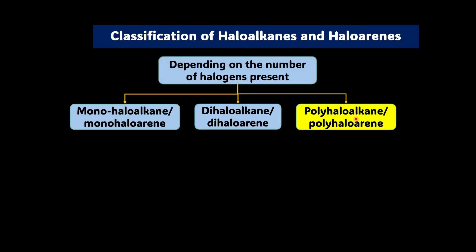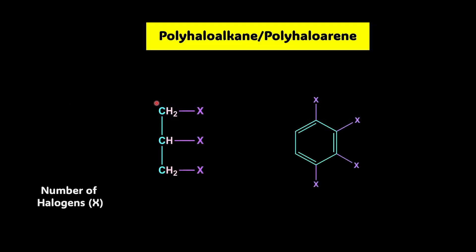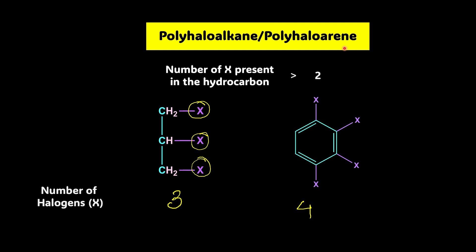Now let's talk about polyhaloalkanes or polyhaloarenes. Like the name suggests, there are going to be more than two halogens. For example, here we have an alkyl chain to which three halogens are attached — so it's a polyhaloalkane. In the second example, we have a benzene ring with four halogens — so it's a polyhaloarene. Polyhaloalkane and polyhaloarene is a generic term we can use whenever the halogens are more than two.